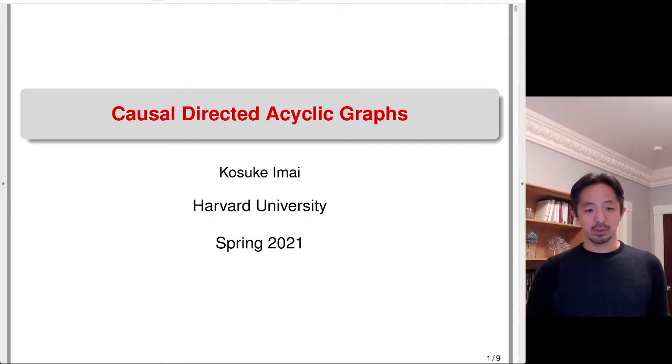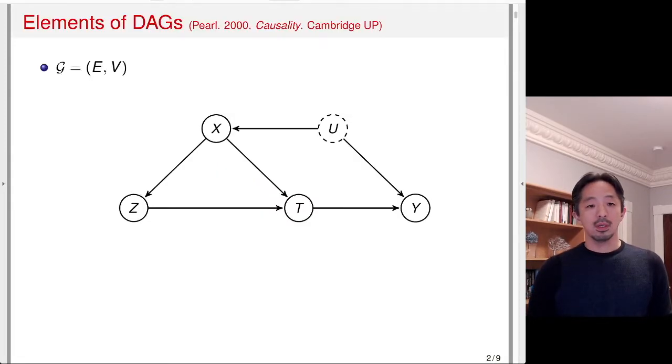In this lecture, we'll discuss causal directed acyclic graphs, sometimes called DAGs or causal DAGs. Causal DAGs were synthesized by Judea Pearl's book in 2000, a book called Causality. In this lecture, we'll give a very quick overview of how the DAGs work and what their properties are.